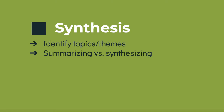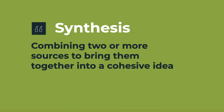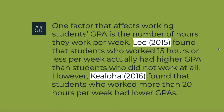One challenge students often have with literature reviews is how to organize them. In the body of the literature review, information is generally organized by topics or themes, with information from multiple sources synthesized within each body paragraph or section. Synthesis can be challenging — when writing up research, it can be tempting to focus on one source at a time. But in literature reviews, you're expected to do more than summarize; you're expected to synthesize. Synthesizing is the process of combining two or more sources to bring them together into a cohesive idea, meaning each body paragraph should draw from at least two sources. If completing this for credit, pause and complete question 6 in the quiz.